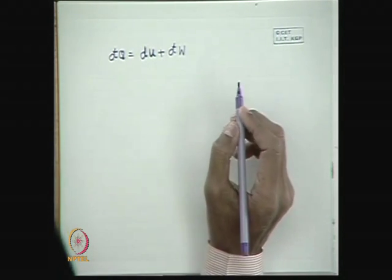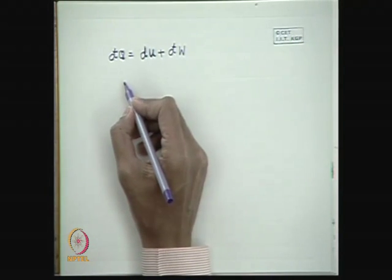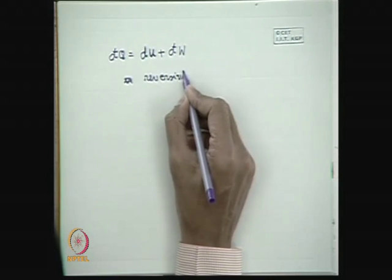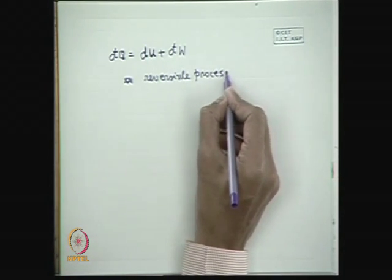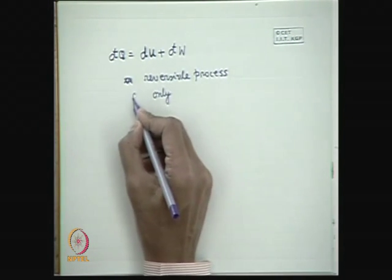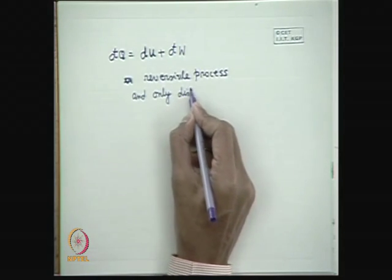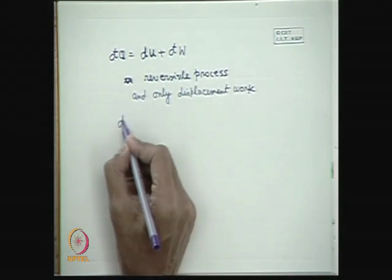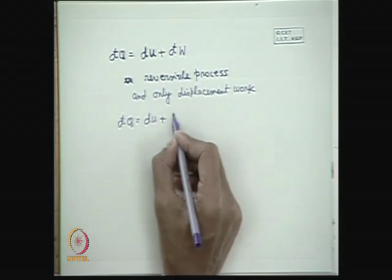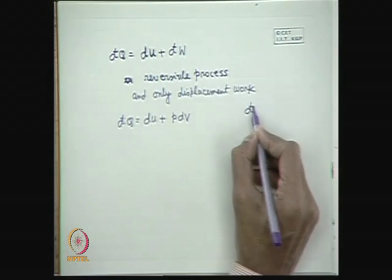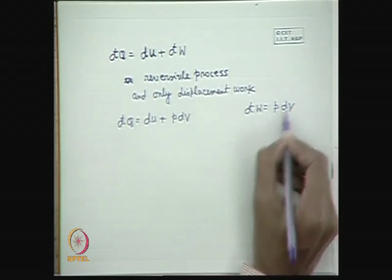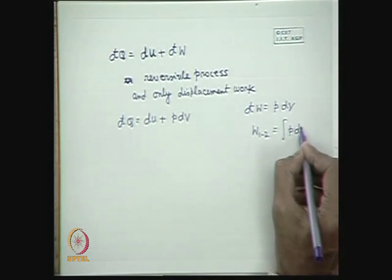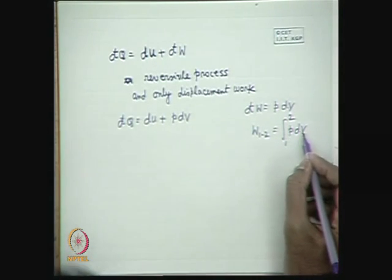Now for the special restriction of a reversible process with only displacement work, we can write this equation as dQ = dU + p dV. That means the infinitesimal amount of work done can be written as p dV, or for any finite process connecting state points 1 and 2, as you know from basic thermodynamics. Until and unless we know pressure as a function of volume, we cannot integrate this.